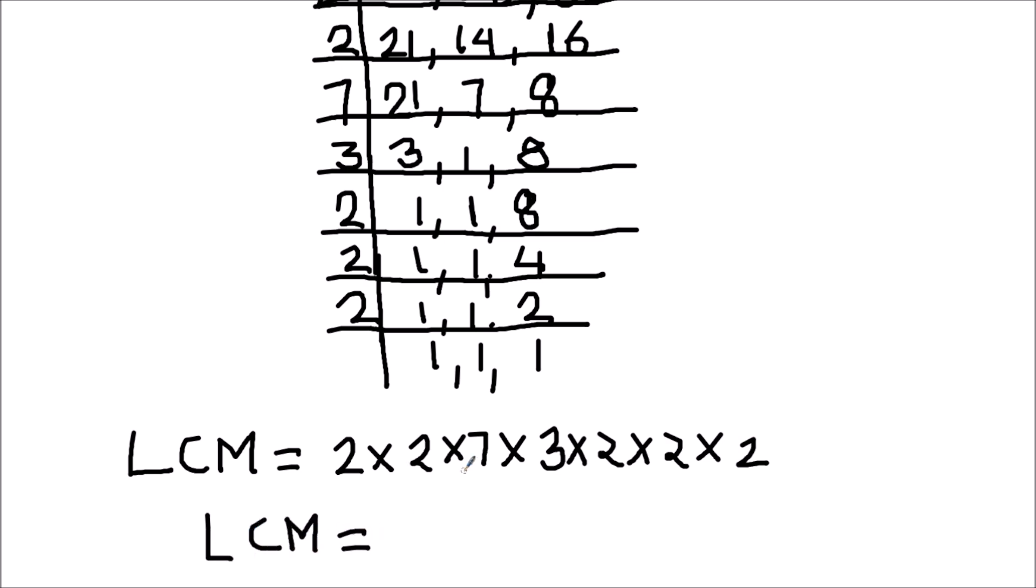2 times 2 is 4. 4 times 7 is 28. Then 3 times 2 is 6, 6 times 2 is 12, and 12 times 2 is 24. So let's multiply these two numbers: 28 times 24. 4 times 8 is 32. 4 times 2 is 8, plus 3 is 11.